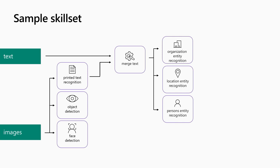The skill set is a definition of the steps needed to enrich your information. In this sample skill set I have some text coming in and some images. Maybe I want to detect objects on the image, detect faces, or get the printed text out of those images. Then I have diagrams — I want to extract the text, merge it together with structured text from the document cracking stage, and then extract different types of entities such as organizations, locations, places, and so forth.